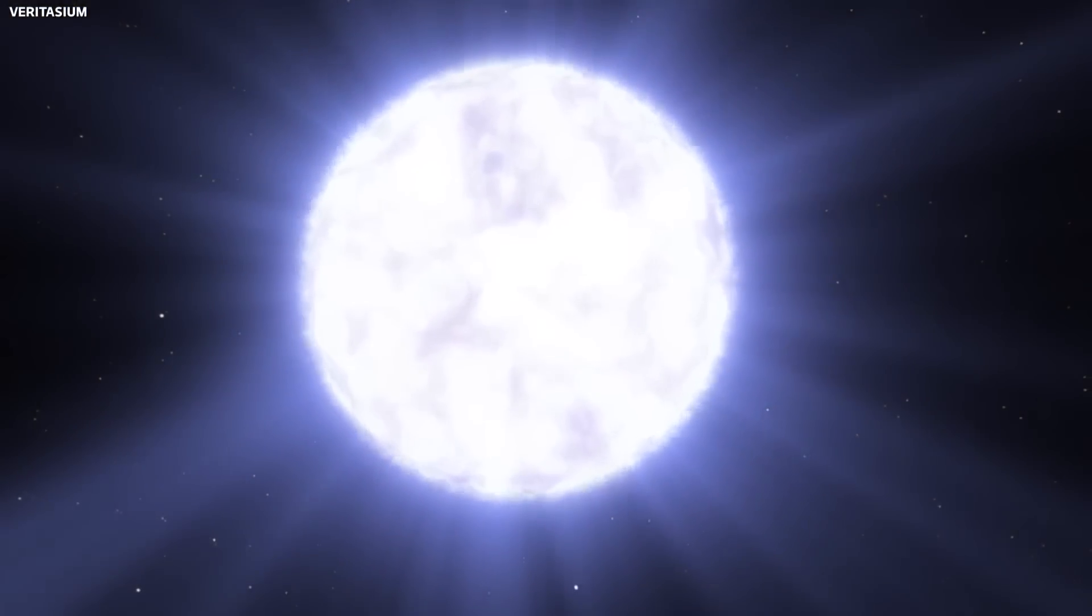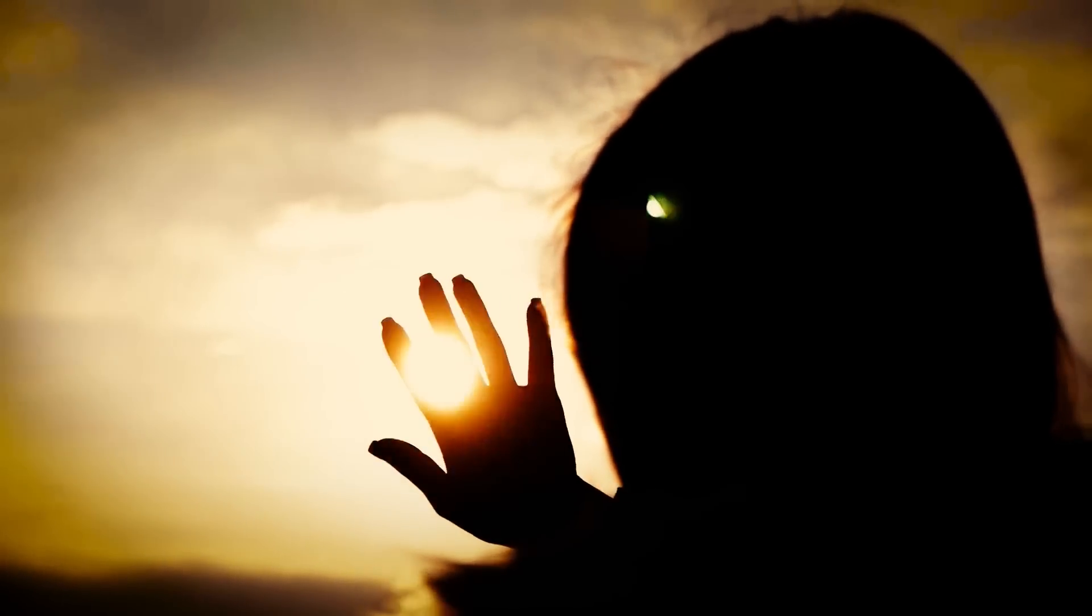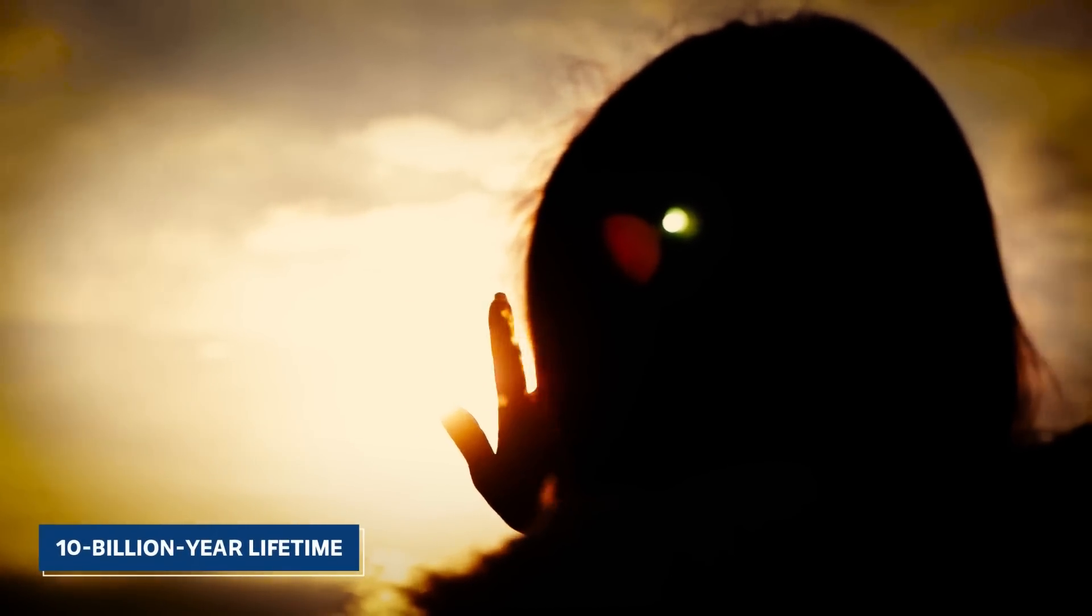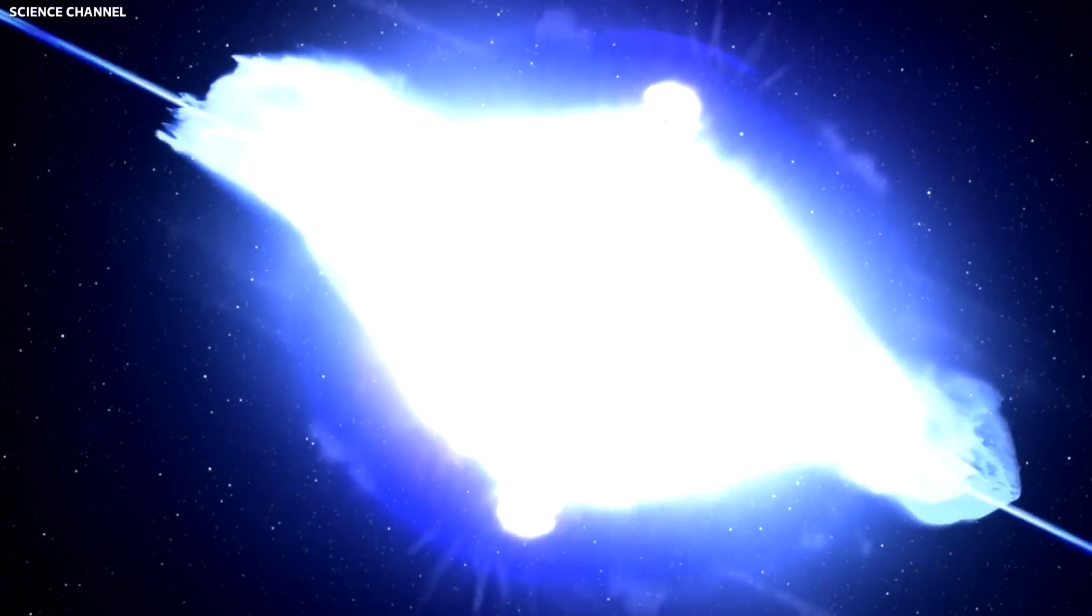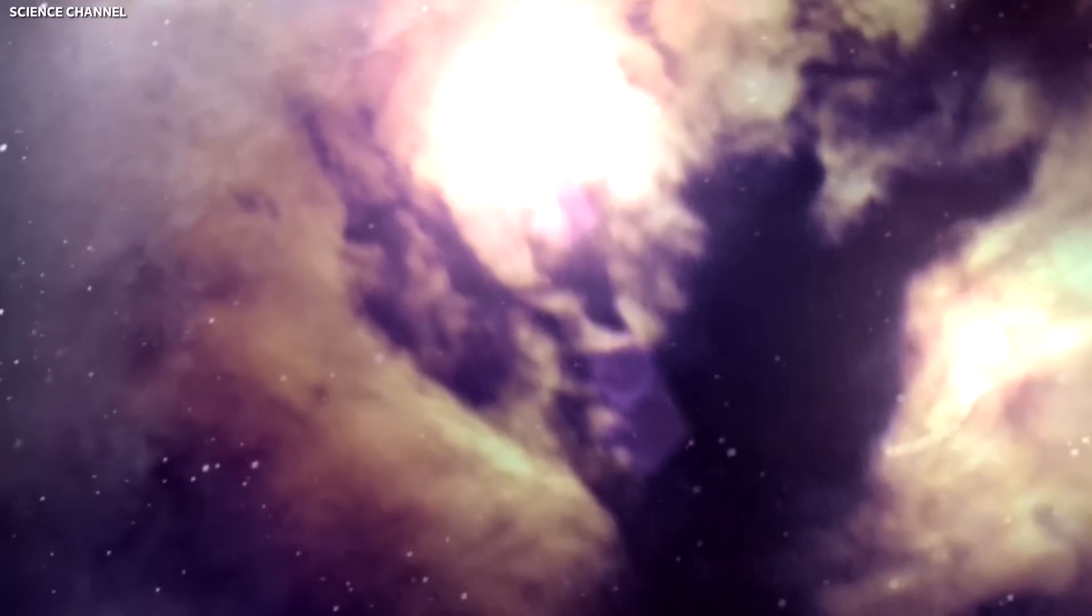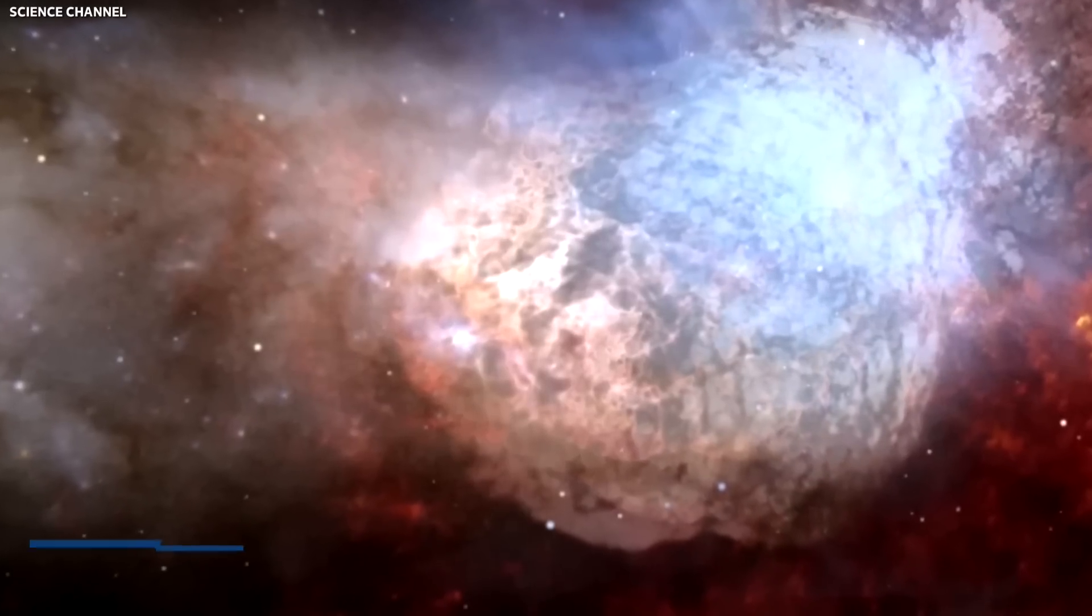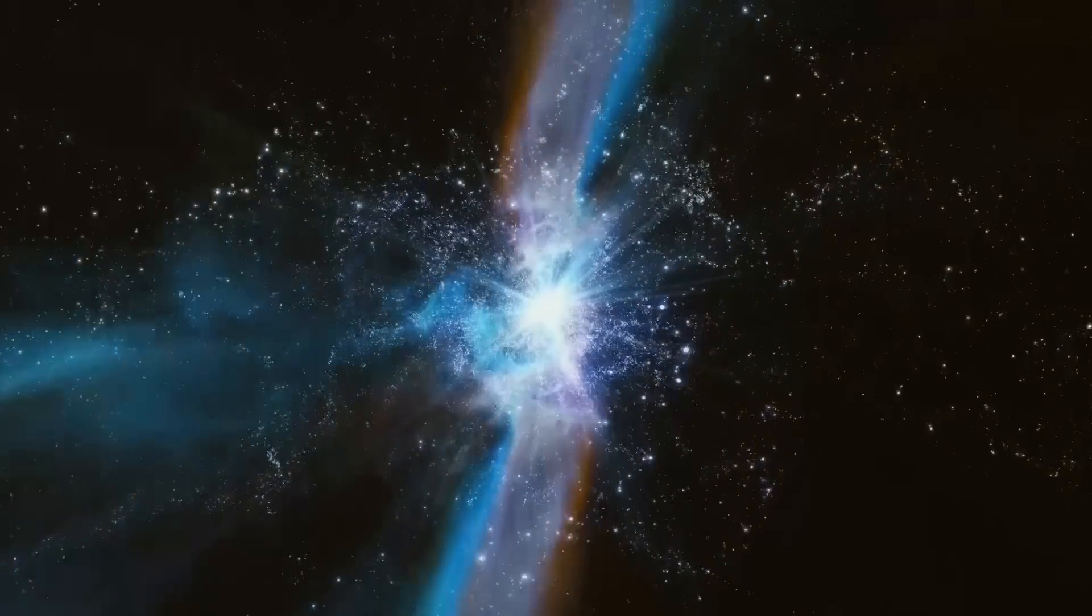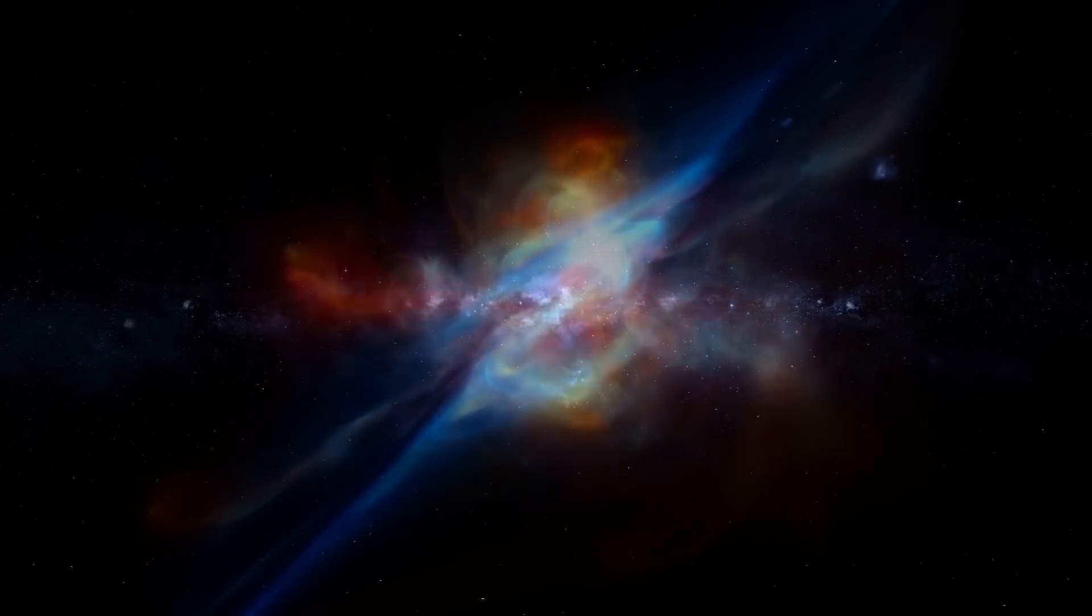However, the light show is just the tip of the iceberg. The energy released during the supernova would be equivalent to the energy our Sun would emit over its entire 10 billion year lifetime. This explosion would send a shockwave hurtling through space, pushing and compressing the interstellar medium in its path. As this shockwave travels, it would heat up the surrounding gas, creating a luminescent bubble of ionized material. This supernova remnant would continue to glow for thousands of years, serving as a lasting testament to Betelgeuse's explosive demise.